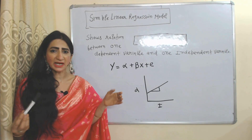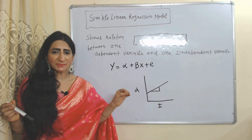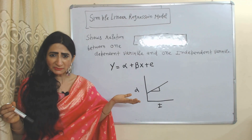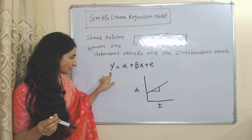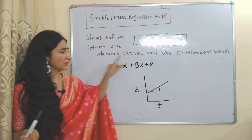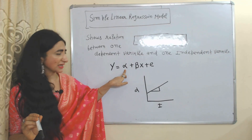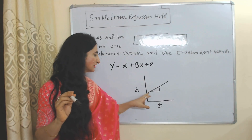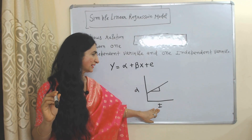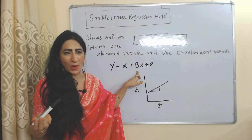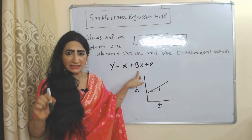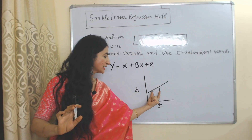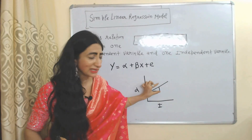Simple linear regression model describes the relationship between one dependent variable and one independent variable. Here Y is the dependent variable and X is the independent variable — we have only one of each. There is an intercept, a coefficient, and an error term. On the X-axis we have the independent variable and on the Y-axis we have the dependent variable. This line shows the relationship between them, and the slope represents the coefficient — it tells us how much the dependent variable changes due to a change in the independent variable.